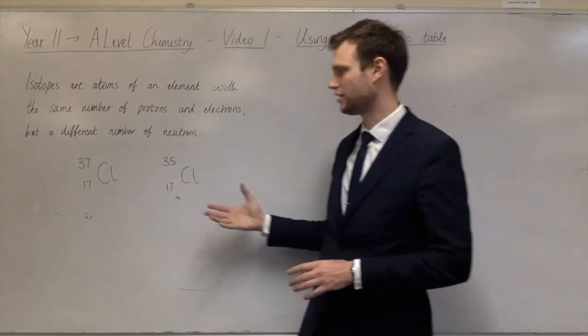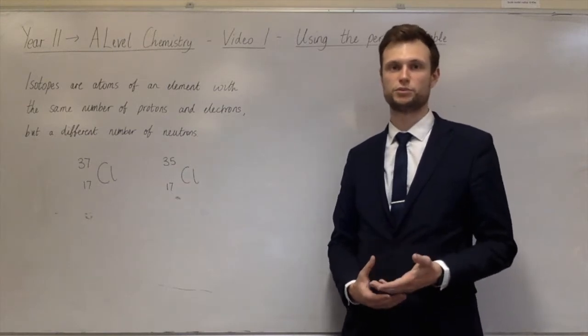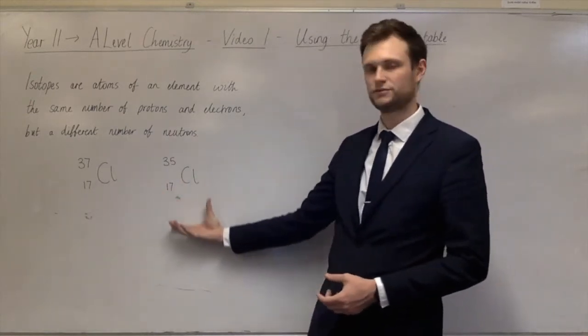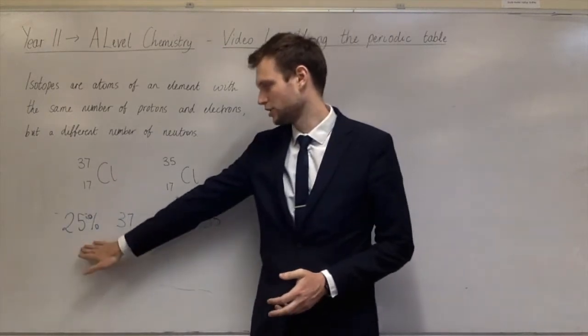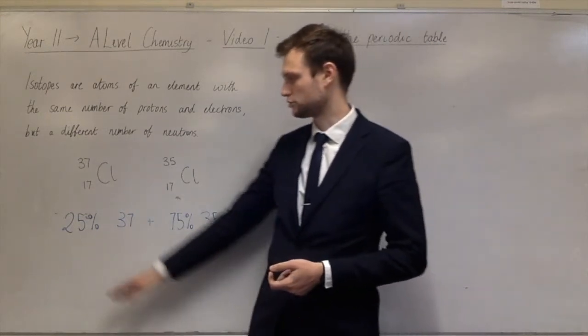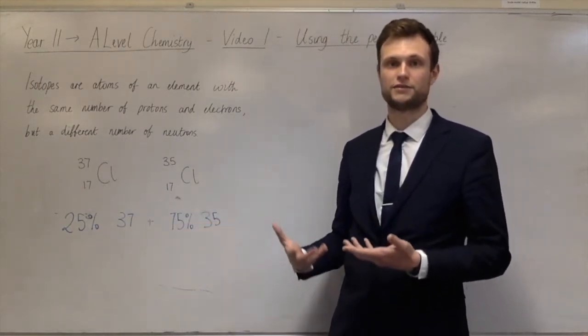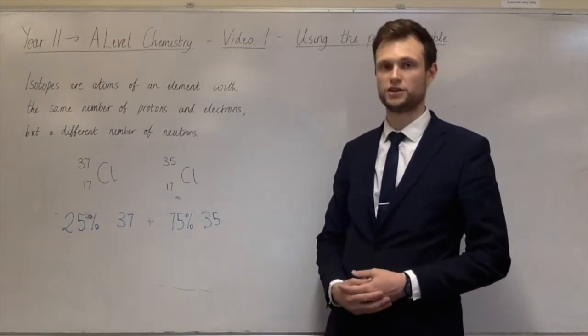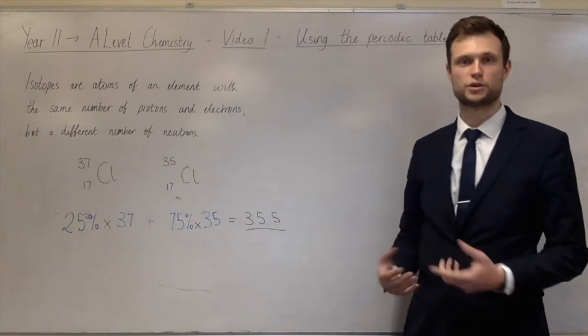If you look at the periodic table you'll notice that it's neither 35 nor 37 which is on the periodic table. Normally on the periodic table it says 35.5. And that number comes from the fact that neither of these is the only type of chlorine. It's about 75% chlorine-35 and about 25% chlorine-37. And it's this 25% of 37 and 75% of 35 which gives us the number which is on the periodic table. So if you just do 25% of 37 plus 75% of 35, that gives you the relative atomic mass which is a weighted mean mass and that is 35.5.